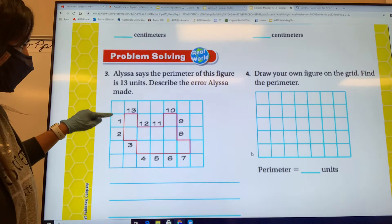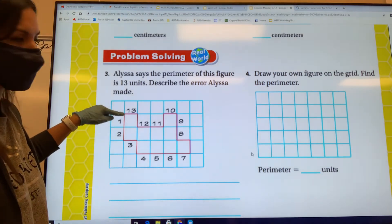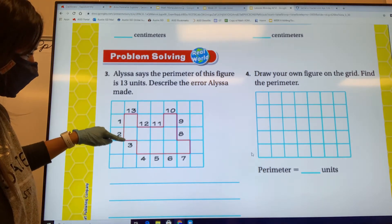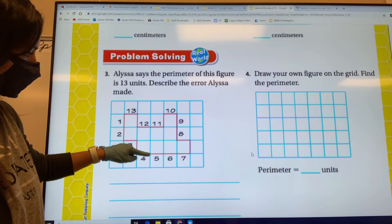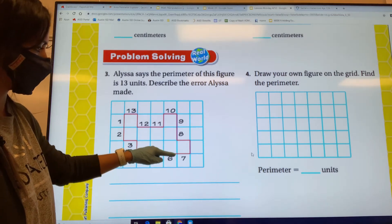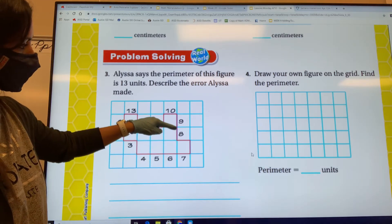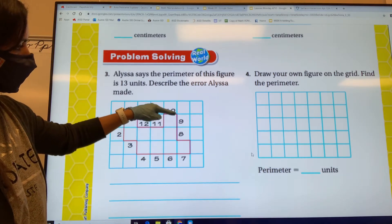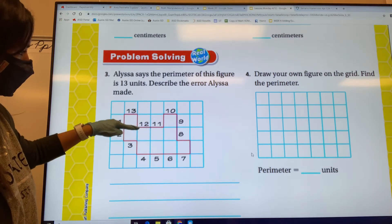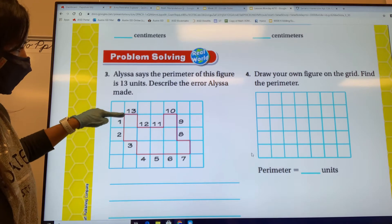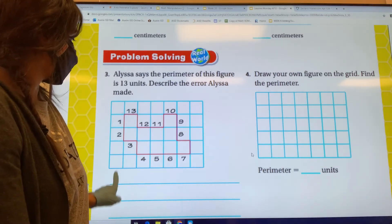We're going to go ahead and start with the number 1. Let's go ahead and put our fingers there and let's count. 1, 2, 3, 4, 5, 6, 7, 8, 9, 10, 11, 12, 13, 14, 15, 16, 17, 18. The answer is 18 units.